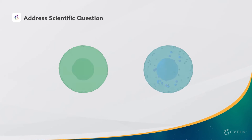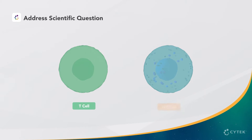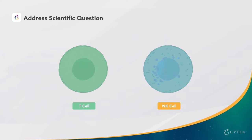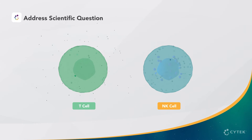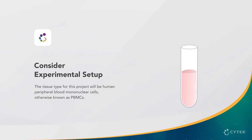From this information, we can determine that the panel will need to contain markers to define both T cell and NK cell subsets. We'll also need markers to identify their activation status. In this case, we'll include markers that indicate the ability of these cells to degranulate and produce pro-inflammatory cytokines. The tissue type for this project will be human peripheral blood mononuclear cells, otherwise known as PBMCs.